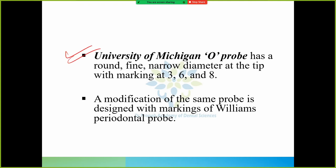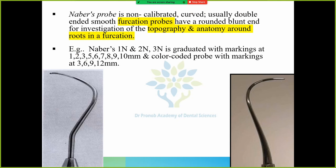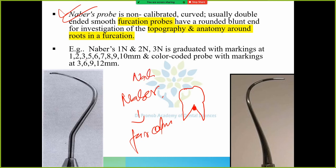Michigan and Nabers probes: University of Michigan probe - Michigan O probe has a round, fine, narrow diameter at the tip with marking at 3, 6, and 8. University of Michigan has marking at 3, at 6, and at 8. Then modification, the Nabers probe. Nabers probe is used for measuring the anatomy around furcation. This is the tooth, this is the furcation. We use Nabers probe to measure furcation.